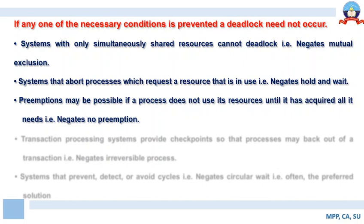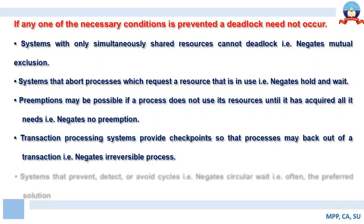So the third necessary condition for deadlock is no preemption, and in order to prevent the system from entering deadlock, we need to negate no preemption. The fourth condition is to negate irreversible processes. Transaction processing systems provide checkpoints so that processes may back out of transactions, providing a stable state to which a process may return if it terminates its ongoing transaction.